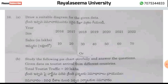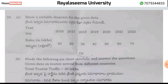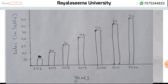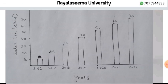Question 16 asks us to draw a suitable diagram for the given data. We will draw a bar diagram, which is easy to read. A line diagram can also be used to represent the data. Looking at the tabular formula and bar graph to represent years and sales.